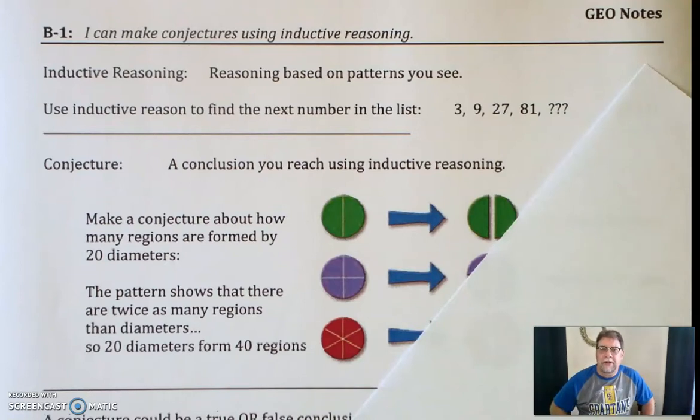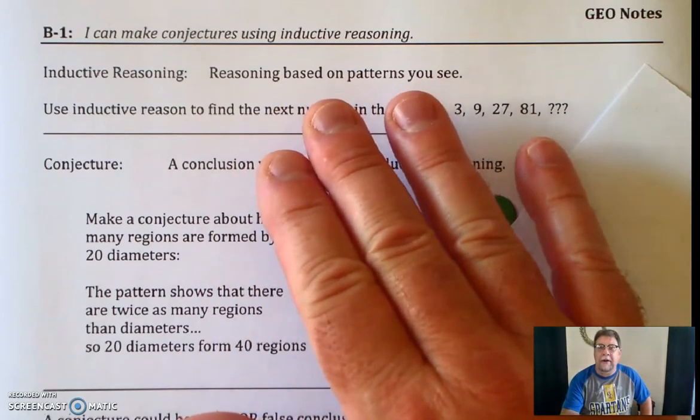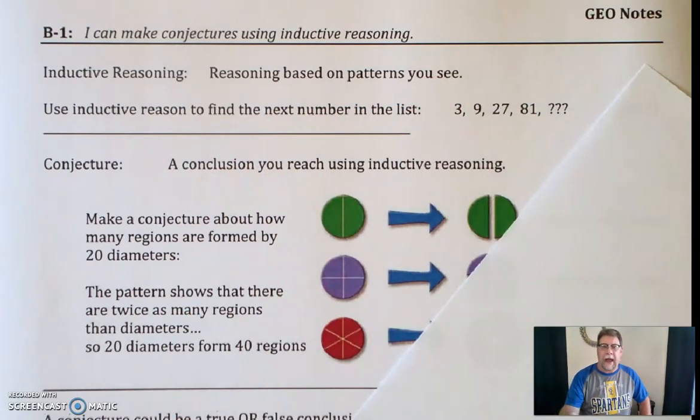There are two types. There's inductive reasoning and deductive reasoning. Inductive reasoning is reasoning based on patterns. You look for a pattern, and then you continue that pattern.